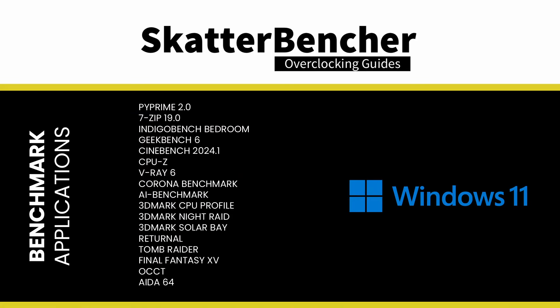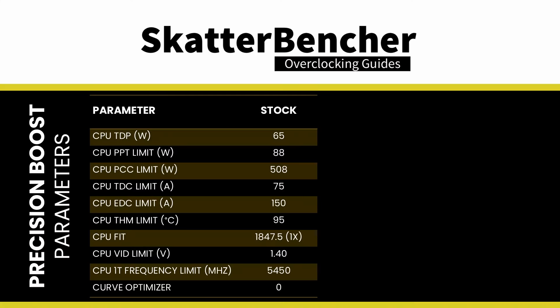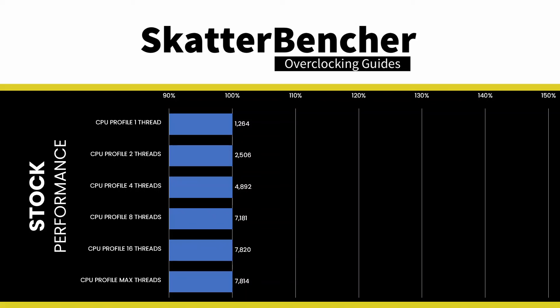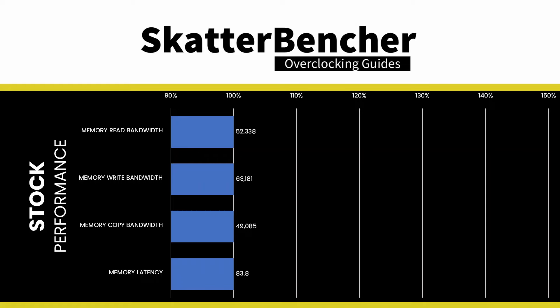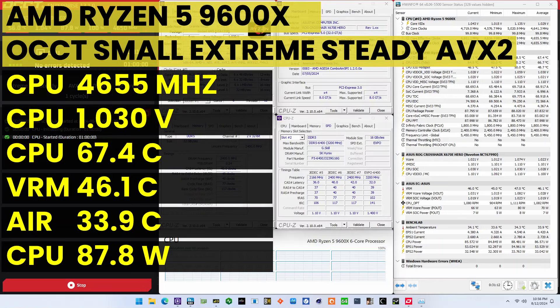The system we're overclocking today consists of specific hardware. We use Windows 11 and benchmark applications to measure performance and ensure system stability. Before overclocking, we check performance at default settings. The default Precision Boost 2 parameters for the Ryzen 5 9600X are noted, along with stock benchmark performance and 3DMark CPU profile scores. When running the OCCT CPU AVX2 Stability Test, the average CPU core effective clock is 4,655 MHz with 1.030 V, the average CPU temperature is 67.4°C, and the average CPU package power is 87.8 watts.